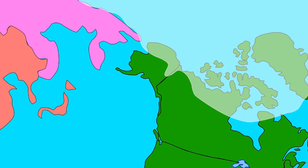A strait may have opened in this land bridge — the precursor to the Bering Strait — perhaps 15,000 years ago, and the modern coastlines were achieved around 6,000 years ago.